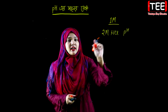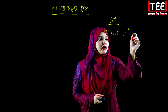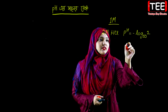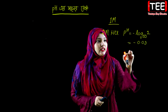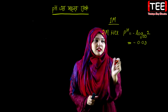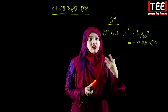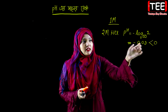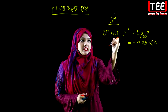For 2 molar HCl, to find the hydrogen ion molar concentration: pH equals minus log base 10, so the value comes out to be minus 0.03. Therefore, our pH is less than 0.